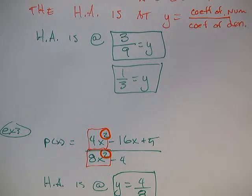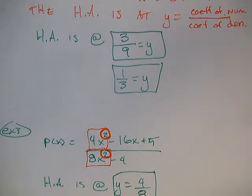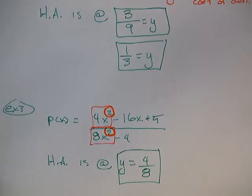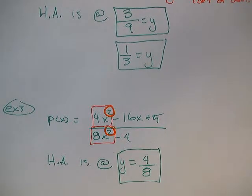There's another case, right? You're probably all wondering, well, what happens if the degree in the numerator is greater than the degree of the denominator? Don't worry about that yet. That's going to give you what's called a slant asymptote. And we'll talk about that next time. All right? I hope this helps. If you need to watch this again, please...